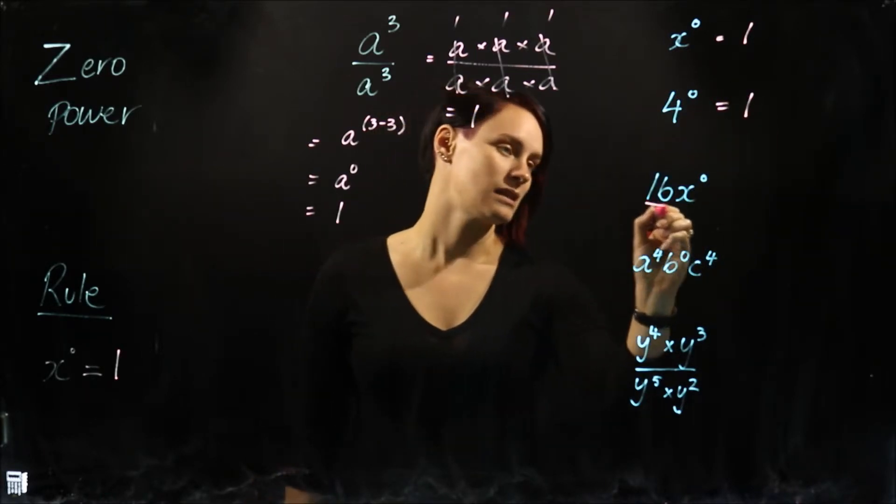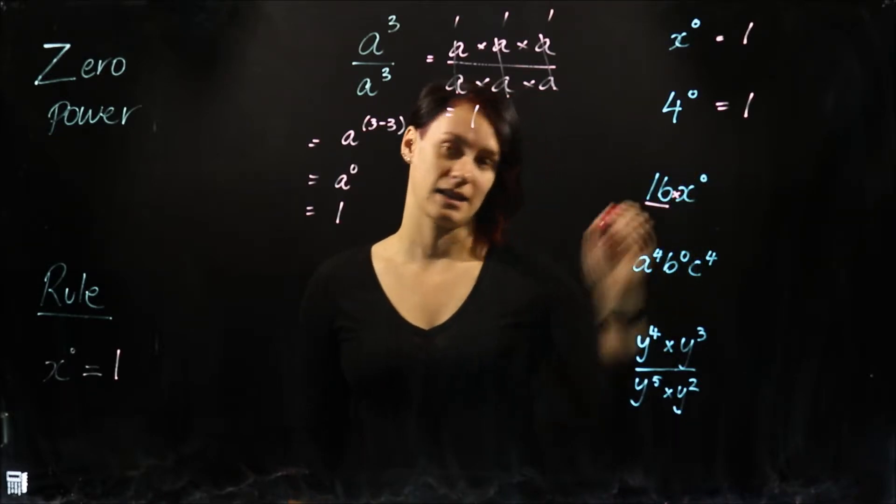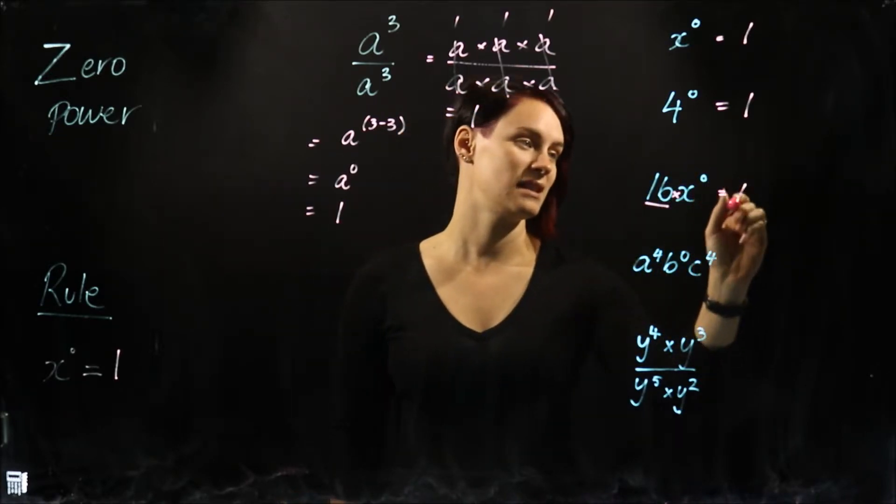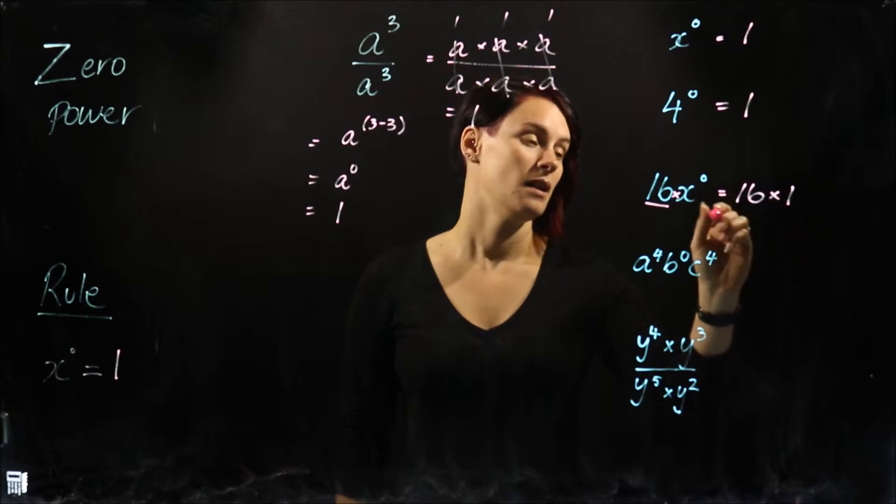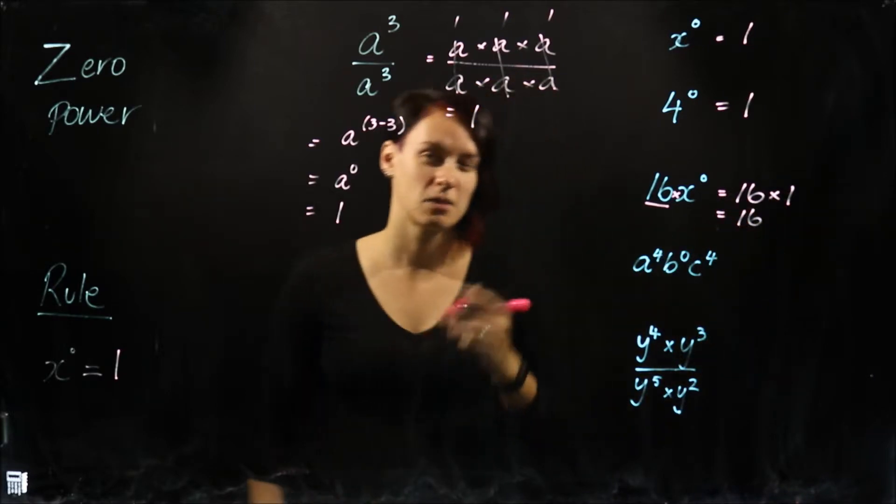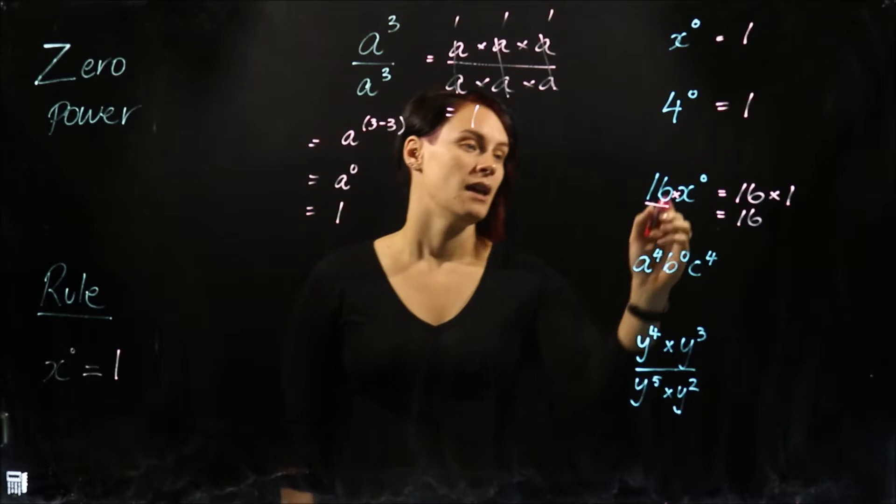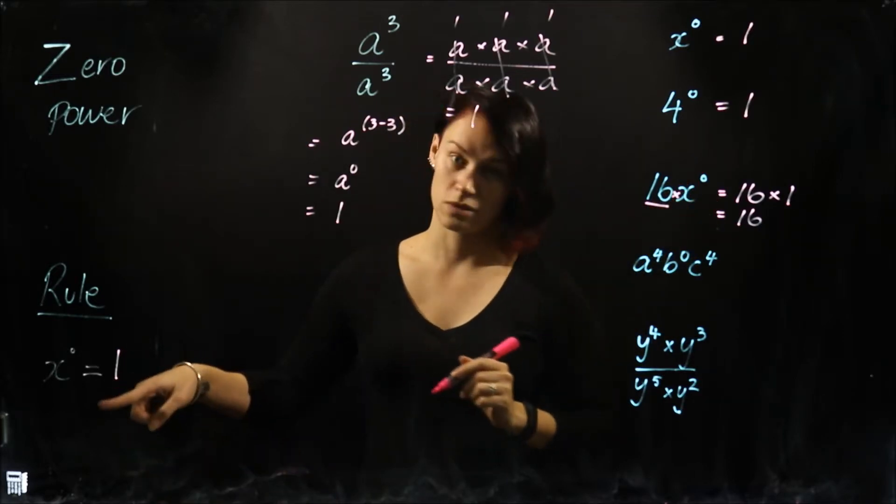This time it's a bit different. We've got 16 times X to the power of zero, which is saying 16 times one, which is 16. So we can't forget that the other numbers are still legitimate numbers. They're just multiplying by something that equals one.